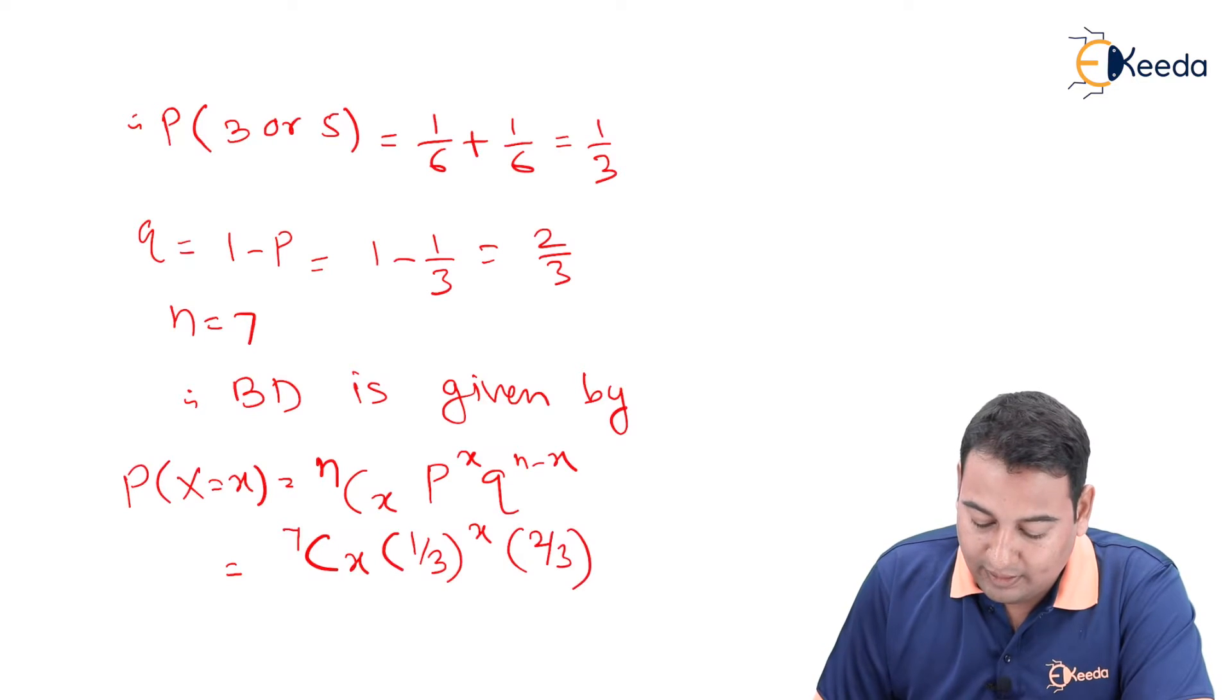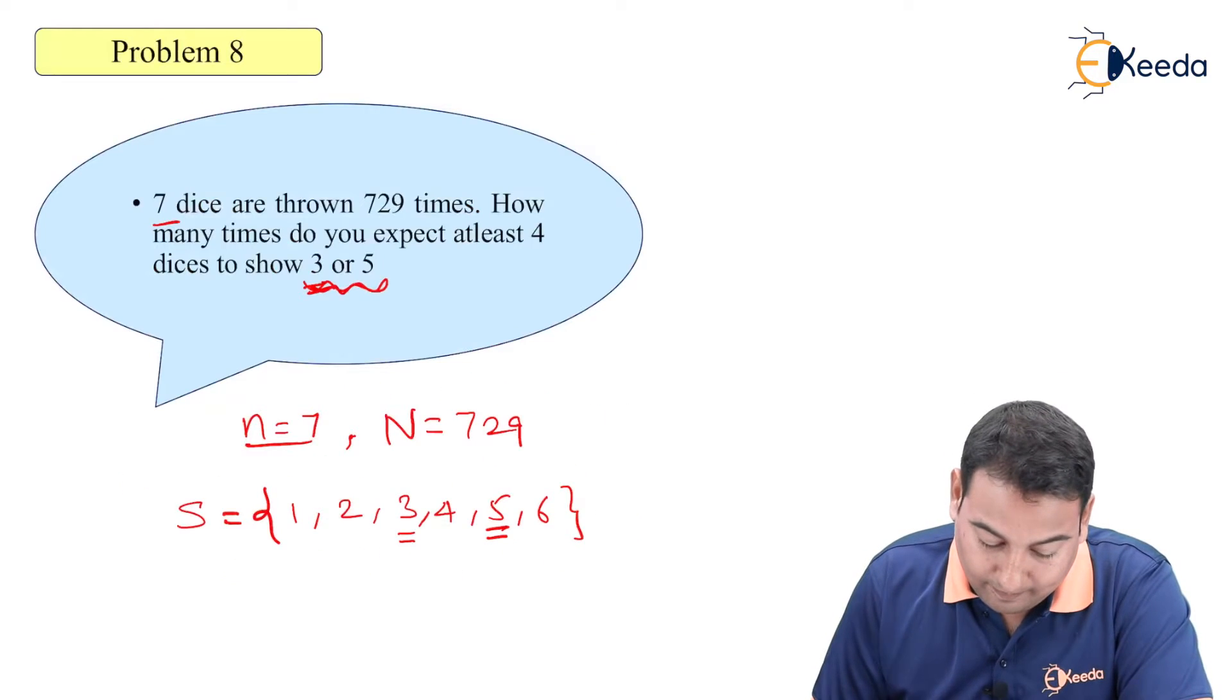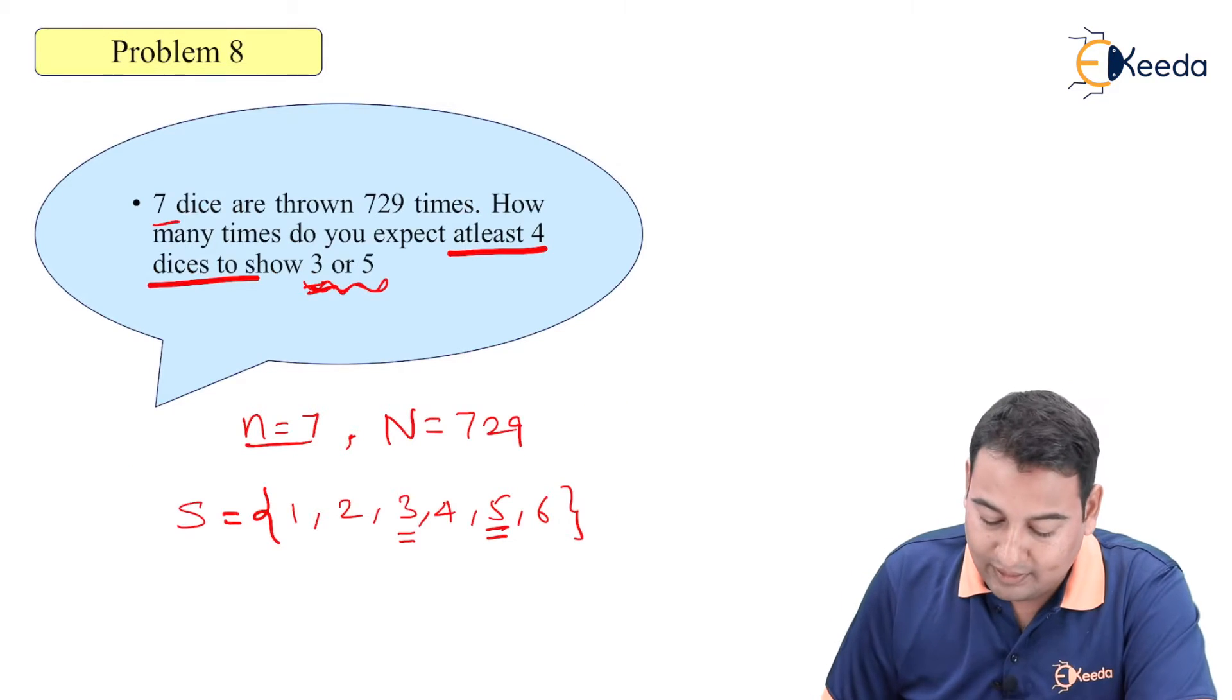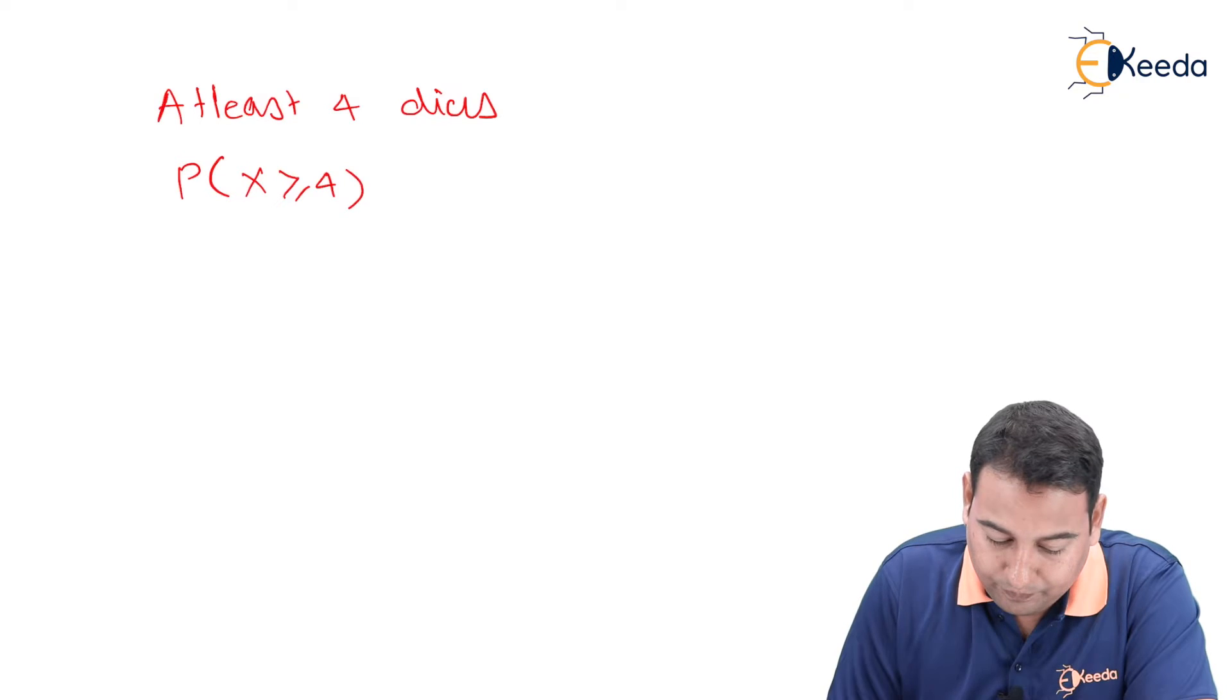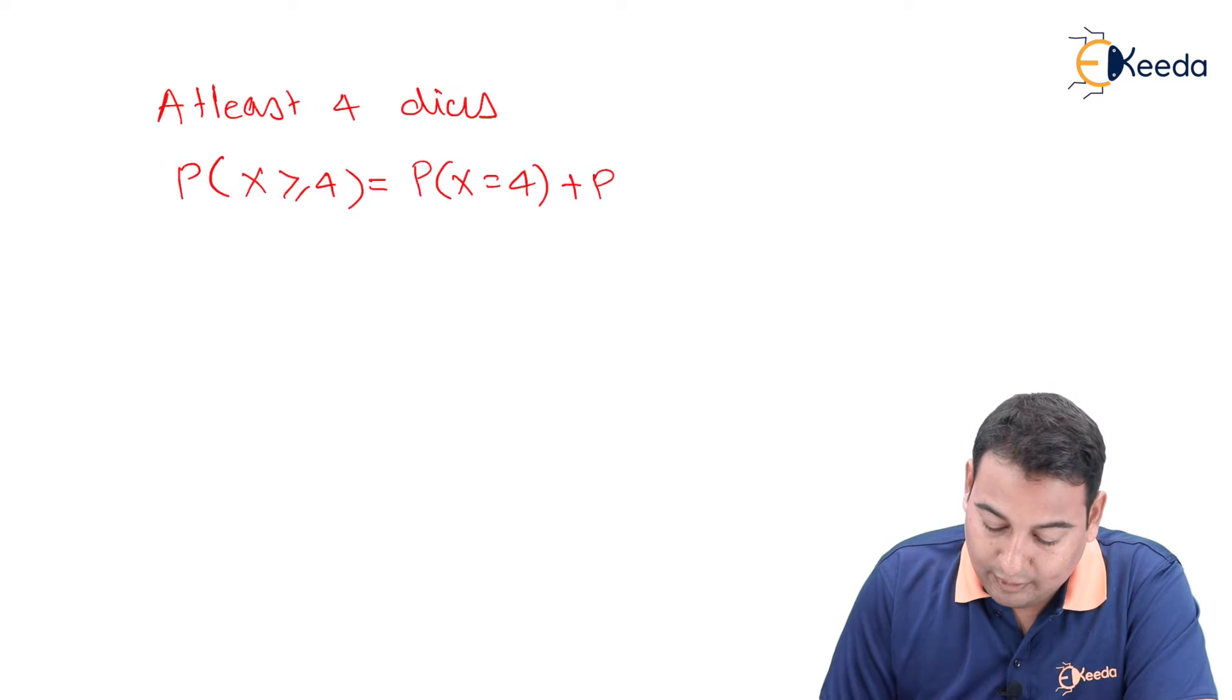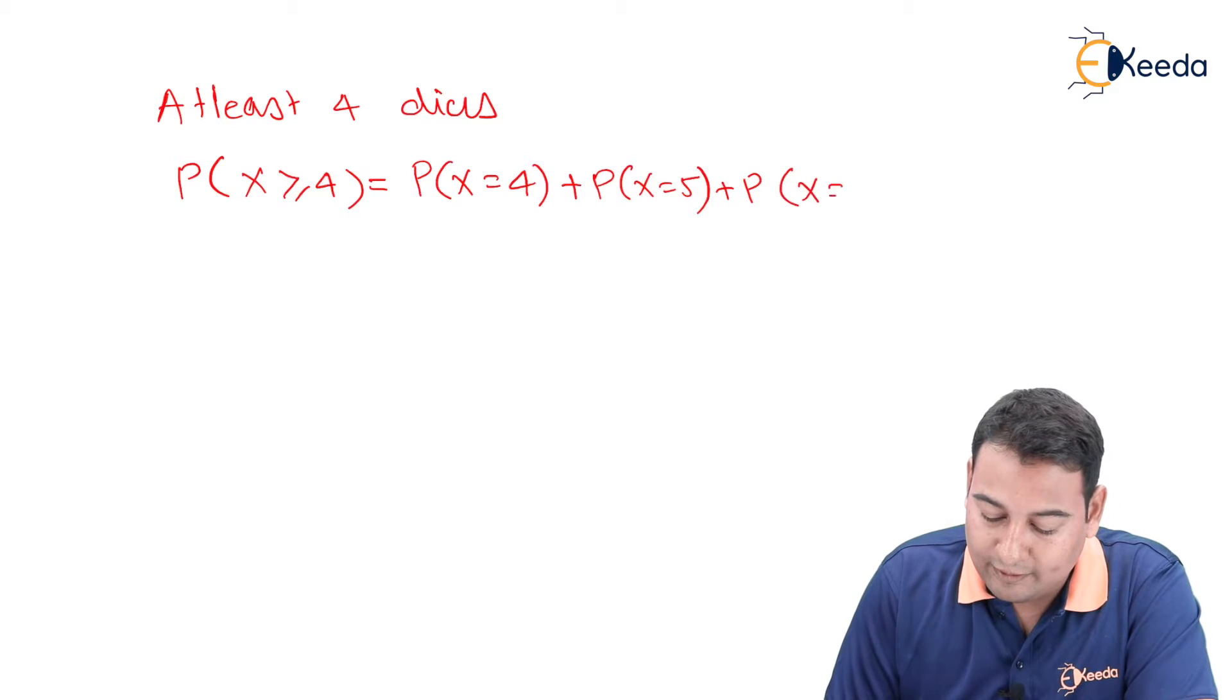2/3 raised to (n-x). Let us check what is asked: at least four dices. What do you mean by at least four dices? At least four dices means probability P(X≥4), which means X equals 4, and it will go up to n (small n): X equals 5, X equals 6, and X equals 7.